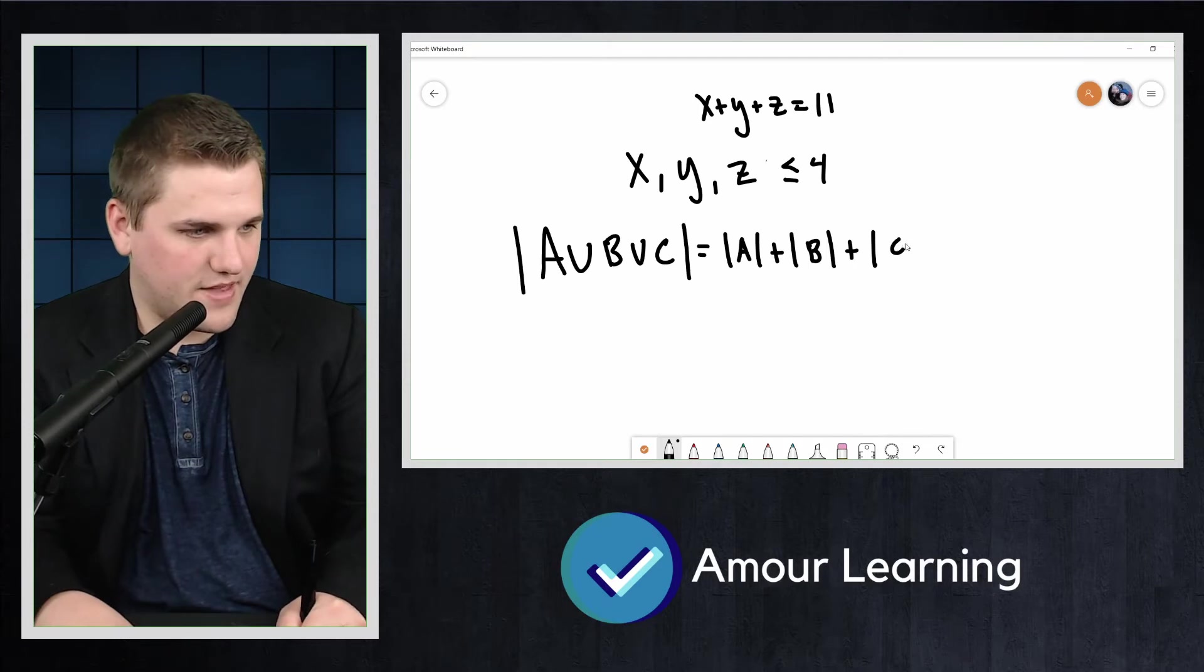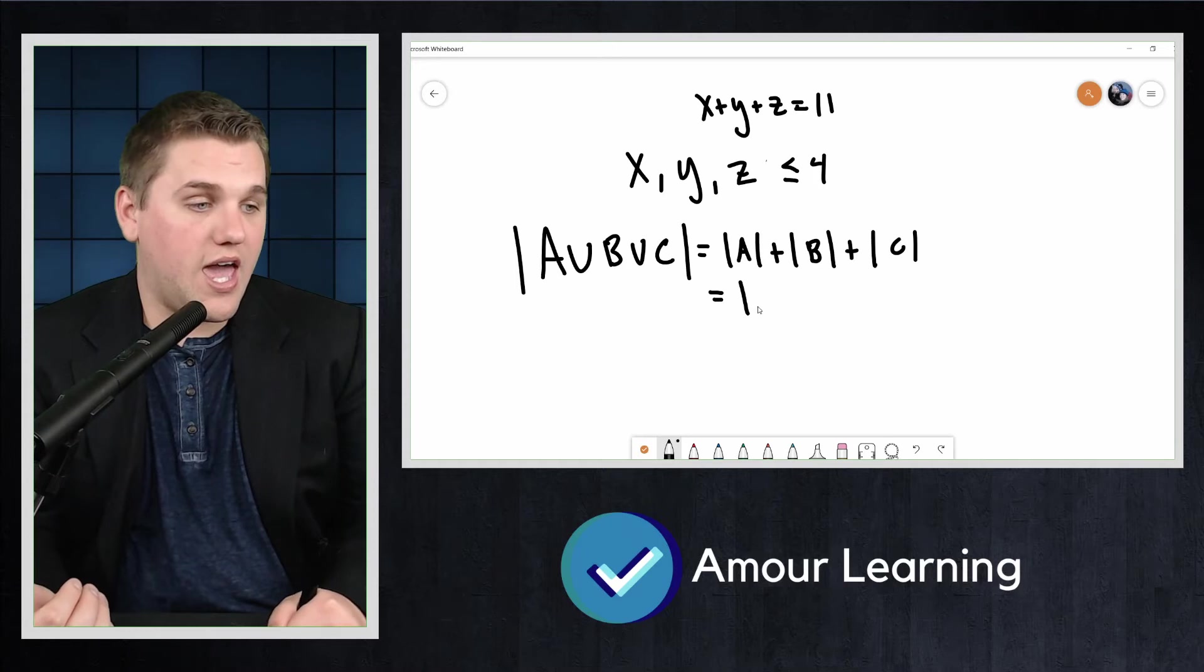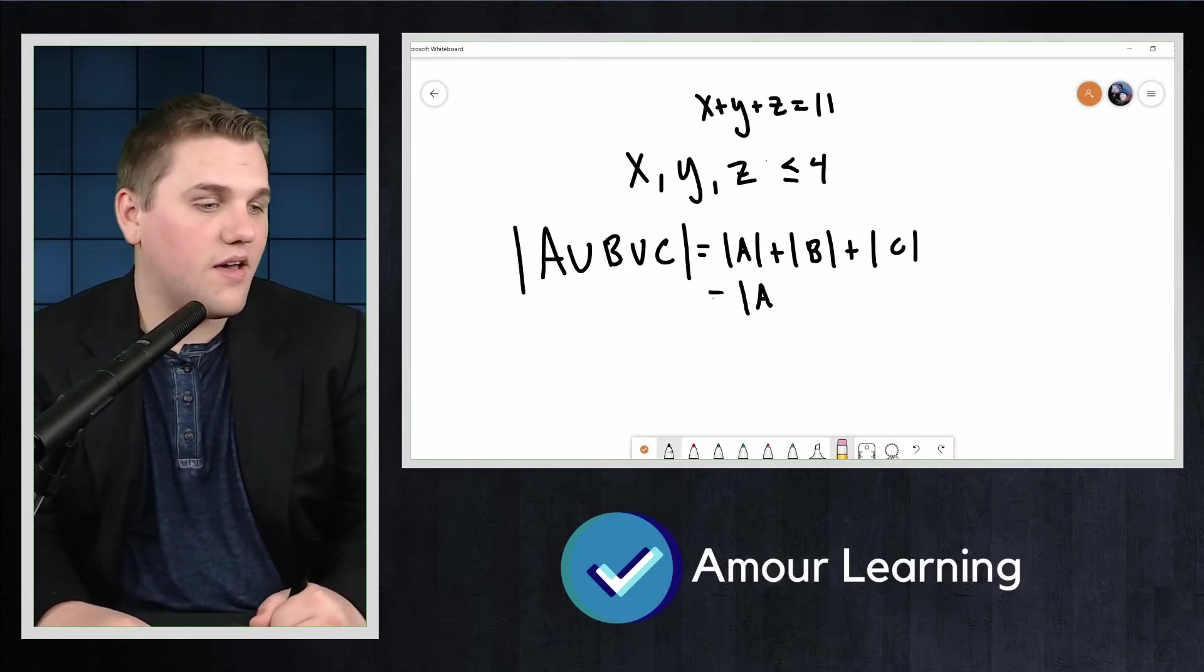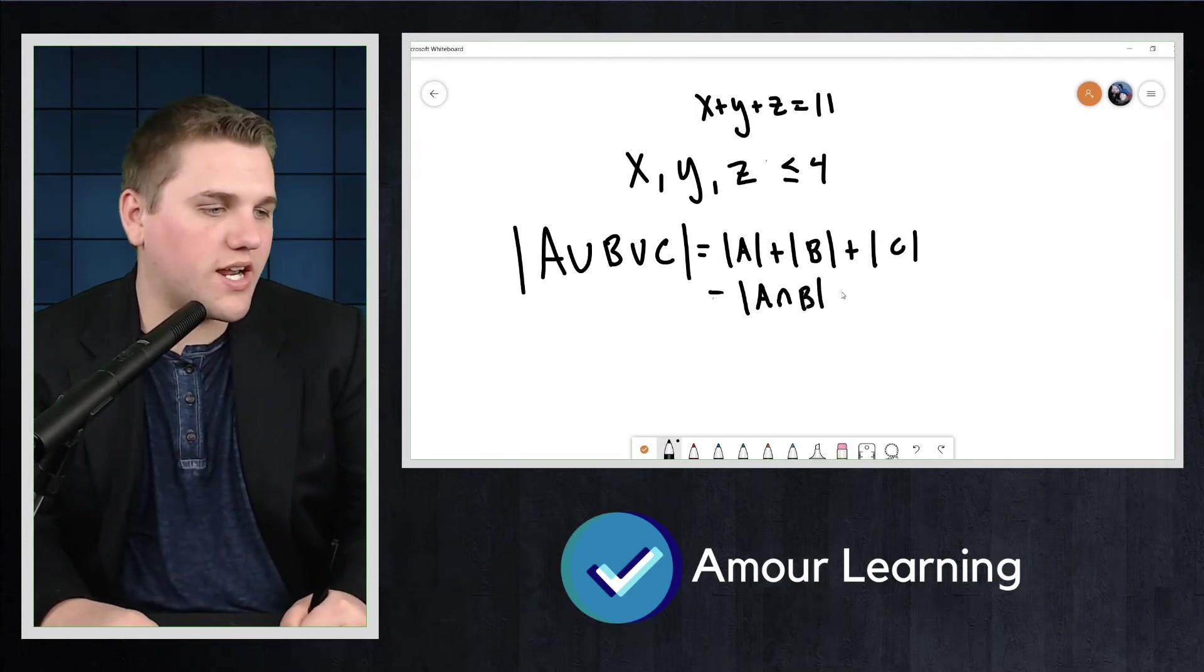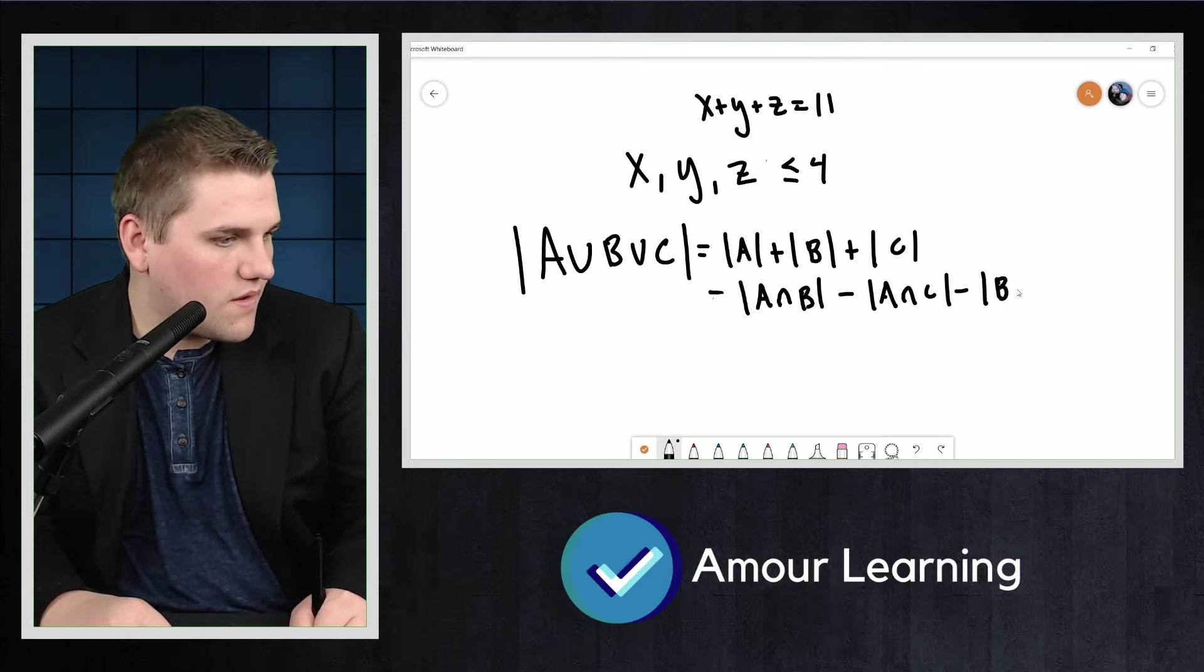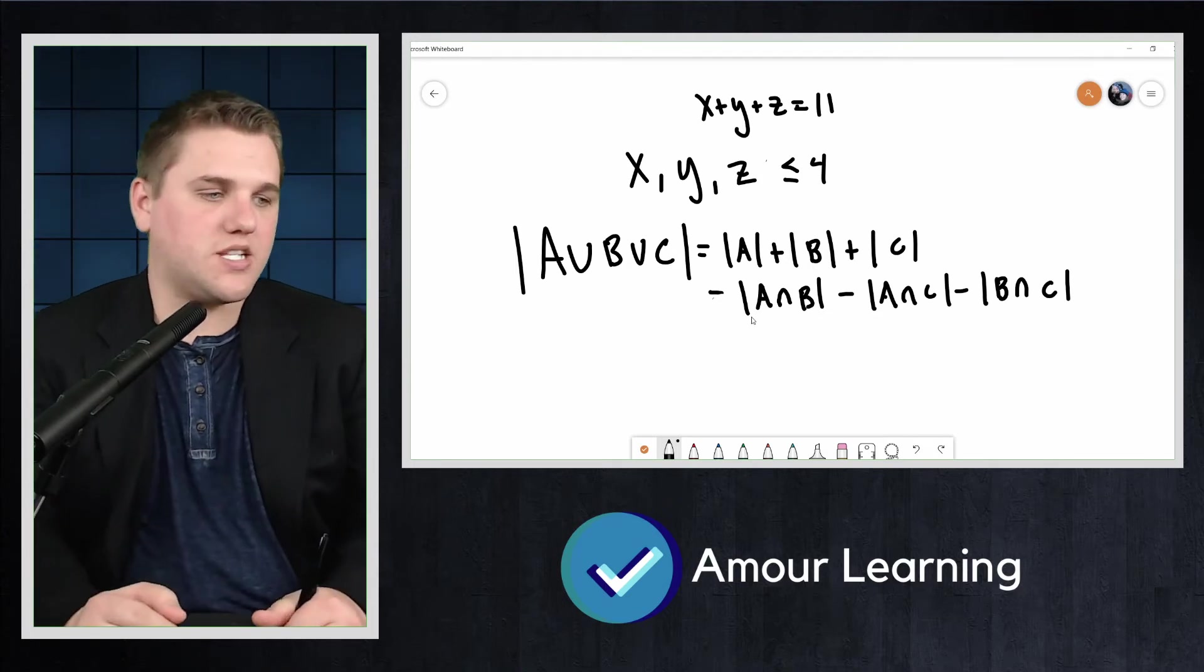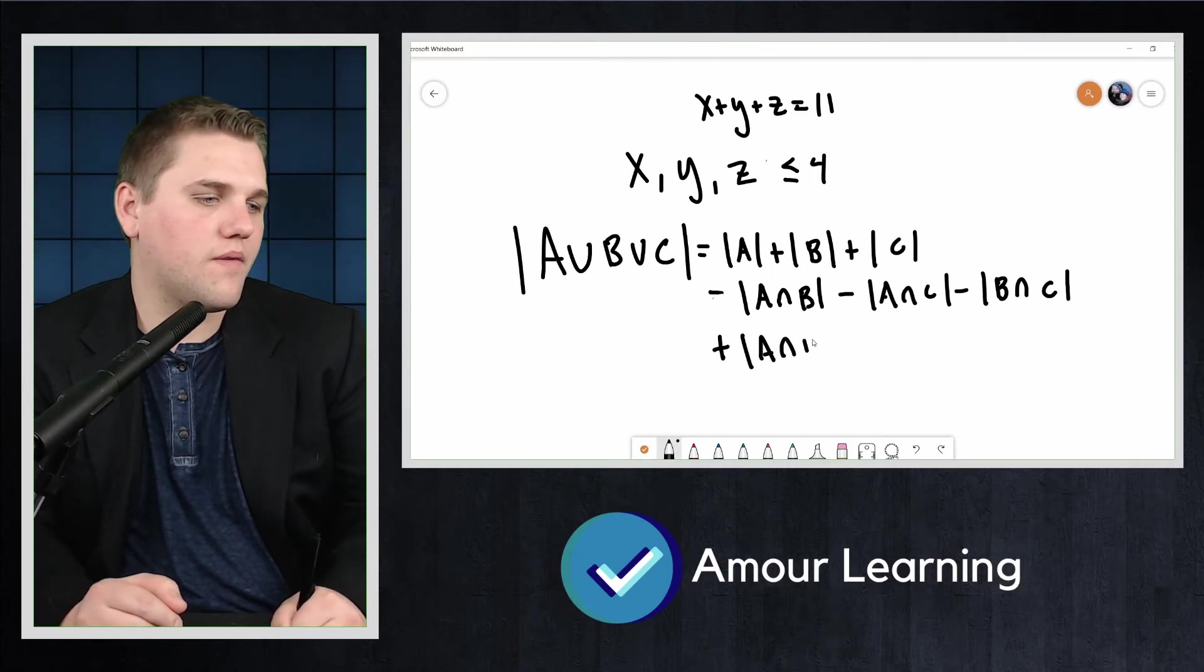That's not a C, there we go. But this is just the size of A, or sorry, we have to take away the intersections between all of these because we don't want to double count. But doing so removes the middle one too many times and so we need to add that back in. And we discussed this in a previous video.